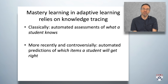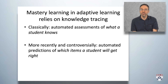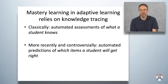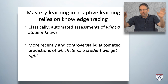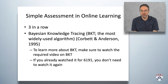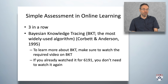Mastery learning in adaptive learning systems relies upon knowledge tracing. Knowledge tracing, classically, is automated assessment of what a student knows. More recently and controversially, it's automated predictions of which items a student will get right. The simplest assessment used in online learning systems is just three in a row correct — as soon as you get three in a row correct, you've mastered it. Even if you get two right, one wrong, and two right, it doesn't count.